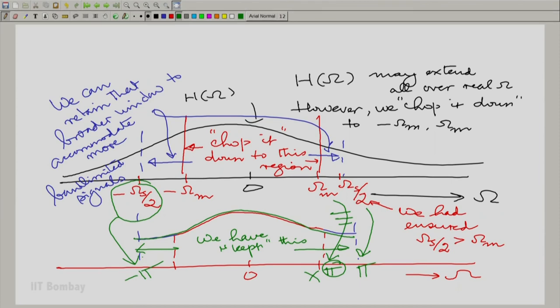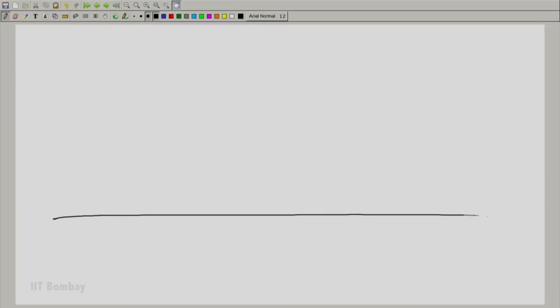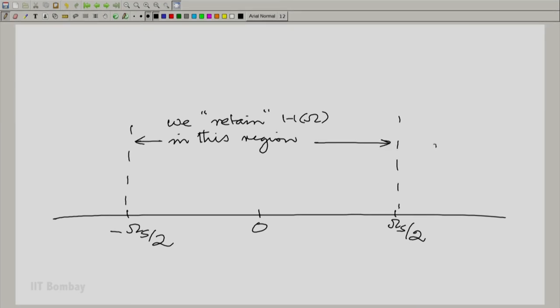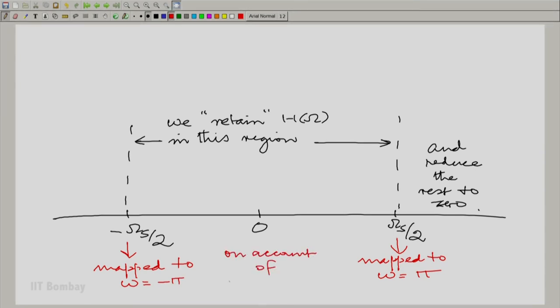Let us redraw this. Since we have made a few changes, we retain capital H omega in this region and remove the rest, reduce the rest to 0. Omega s by 2 maps to pi, small omega equal to pi. And minus capital omega s by 2 maps to small omega equal to minus pi on account of normalization.